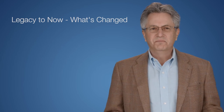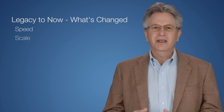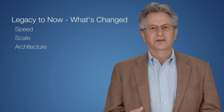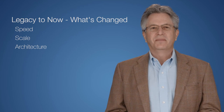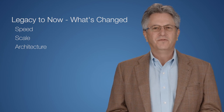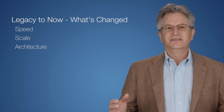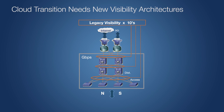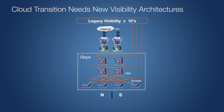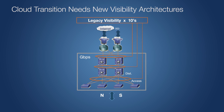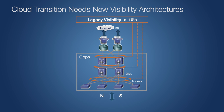What's changed is speed, scale, and architecture. While data centers have embarked on a path to higher performance and higher densities at a global scale, visibility architectures have remained lacking, designed for an era of static hierarchical network designs with slower speed lengths and limited points of access.